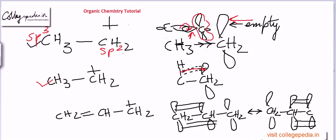Hyperconjugation is stronger than inductive effect for two obvious reasons. Reason number one: more electronic density is pushed into the empty orbital. Reason number two: electrons are pushed directly into the empty orbital rather than into some other orbital which already has some electronic density.